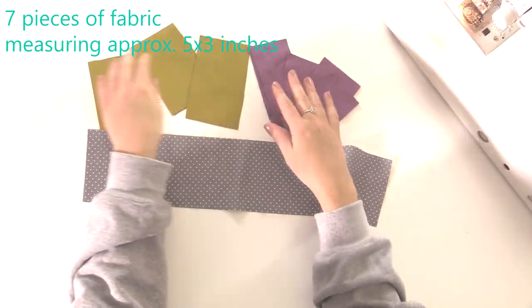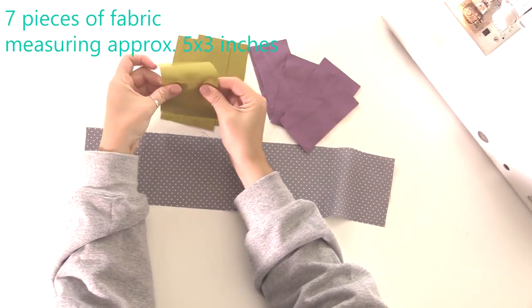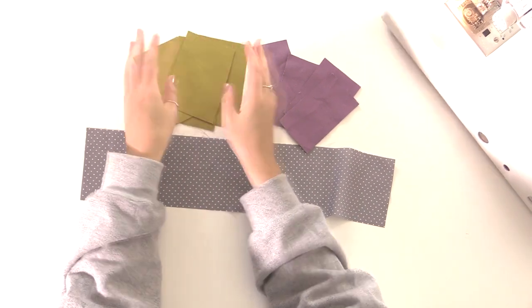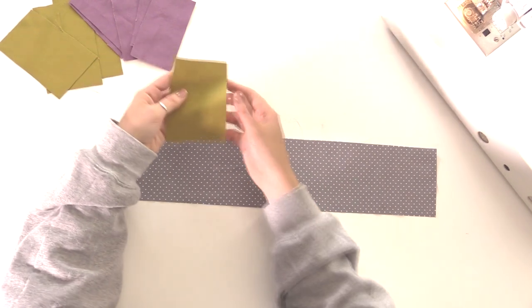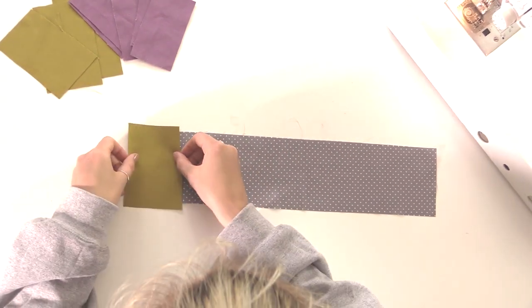I've used seven pieces of fabric on my panel, but use as many as you want or as little as you want. They don't have to be five by three inches, they can be a bit longer or a bit shorter depending on what you have, just as long as they're longer than your scrap piece.